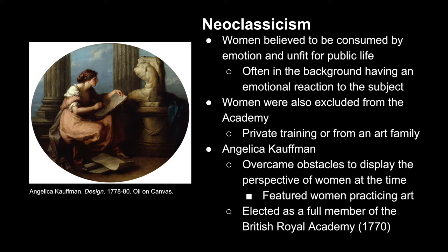One such female artist was Angelica Kaufman. Just by becoming an artist in and of itself, she overcame these obstacles, and in doing so she was able to depict the perspective of women at the time, which, due to the situation, was not very common. She often featured women who were actively practicing being artists, which goes against the time period because women are in active roles in her paintings, fulfilling a career not really offered to them. In 1770, she was actually elected to be a full member of the British Royal Academy.